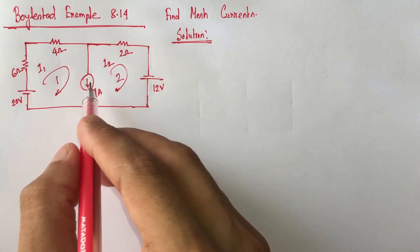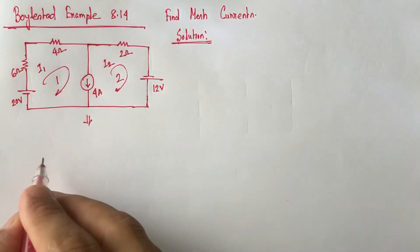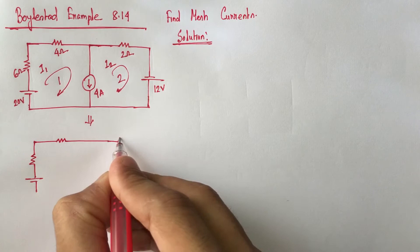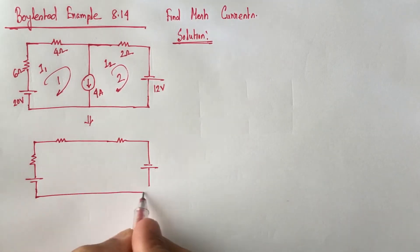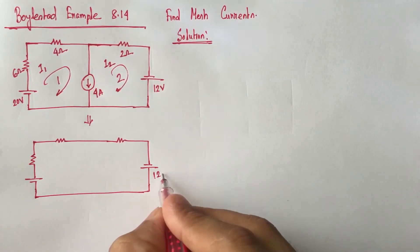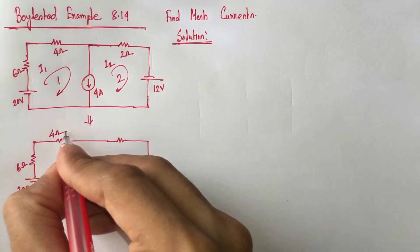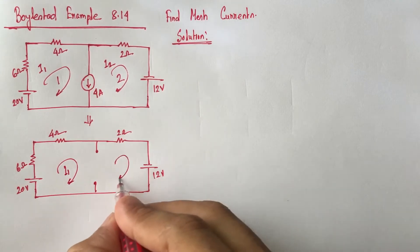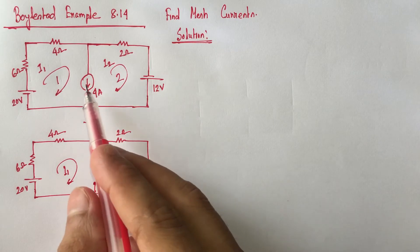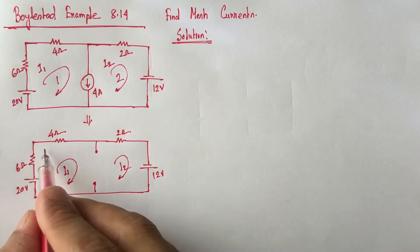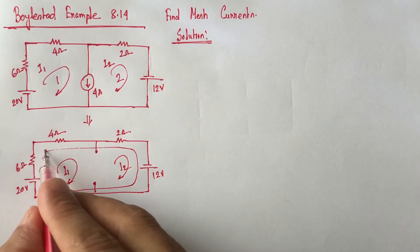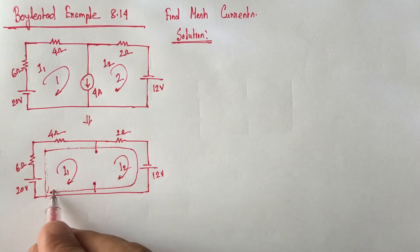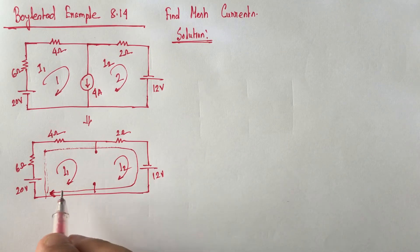For solving the super mesh circuit, we can mentally remove the 4 ampere current source and redraw the circuit. The circuit has 12 volt, 20 volt, 6 ohm, 4 ohm, and 2 ohm. This is i1 current, this is i2 current. If we virtually remove the 4 ampere current source, this is a single path for current. The single current flowing through the two loops is called the super mesh current.